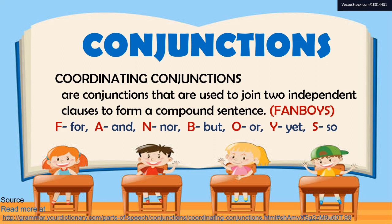These connectors are called conjunctions. Coordinating conjunctions are conjunctions that are used to join two independent clauses to form a compound sentence. These conjunctions are sometimes called FANBOYS: F for 'for,' A for 'and,' N for 'nor,' B for 'but,' O for 'or,' Y for 'yet,' and S for 'so.'